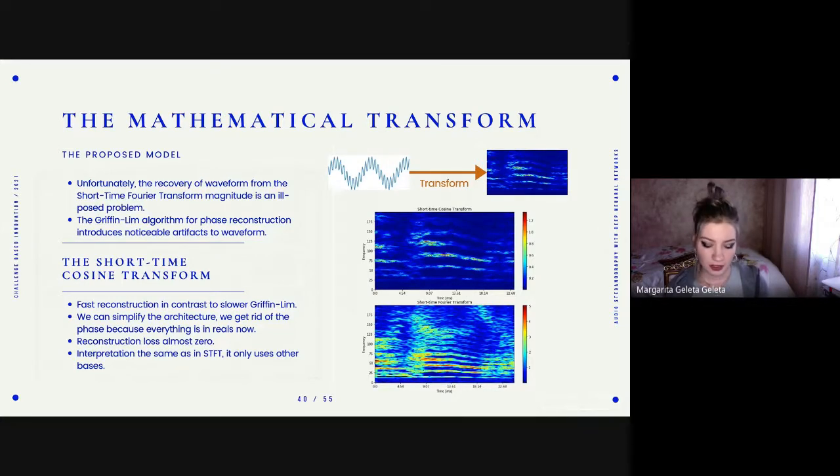And the important note is about the transform. Usually researchers have used the short-time Fourier transform to extract features of the audio and then do some kind of classification or whatever task they need to do. But in my case, since I have to go back to the waveform domain, it is a bit difficult. It introduces issues because we lose the phase. We have some algorithms for phase reconstruction, but it introduces some noticeable artifacts which are not good for reconstruction.